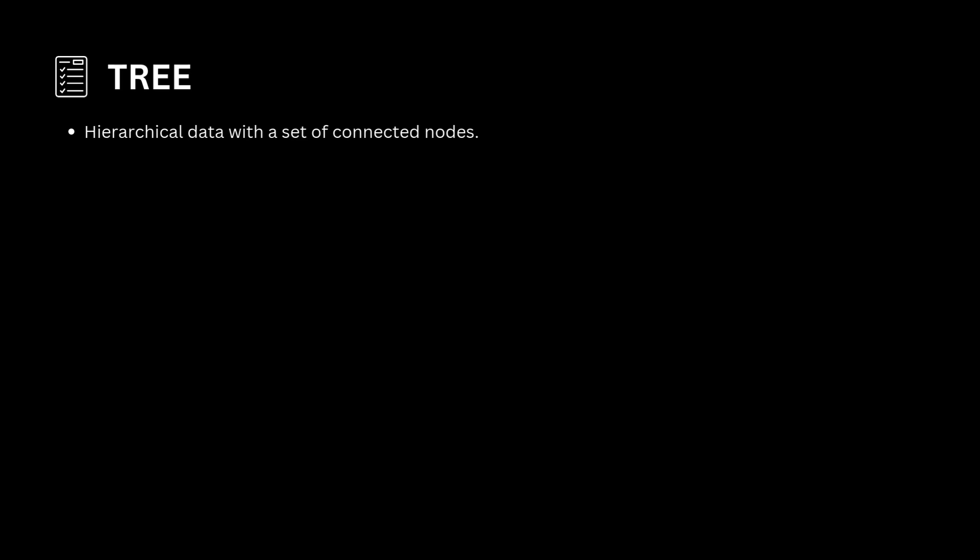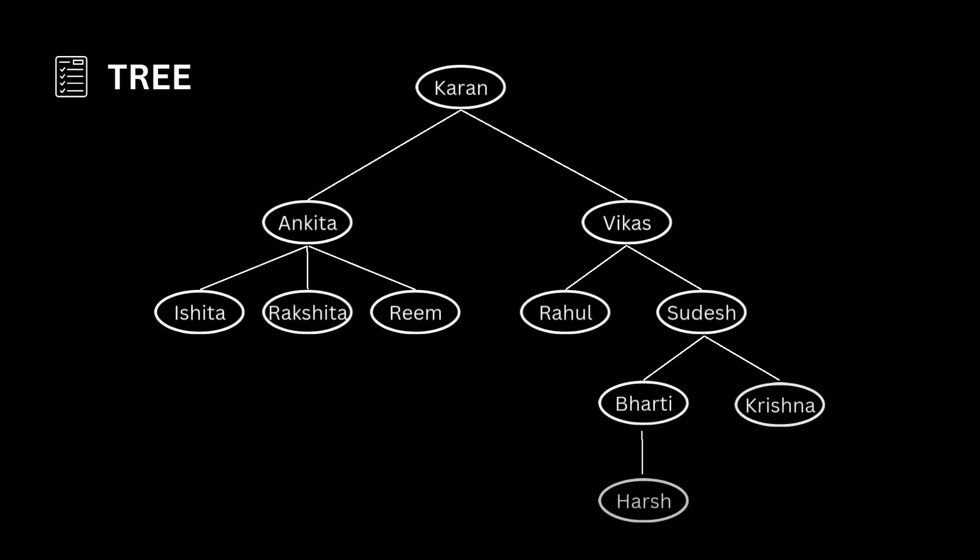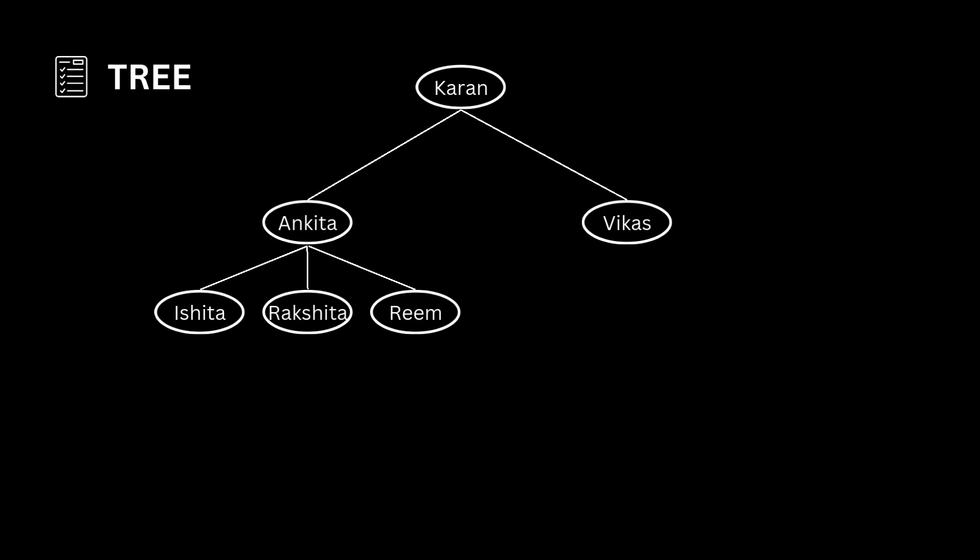If we want to show an organization's employees according to their designation in a hierarchical form, it can be shown like this. This is an organization's hierarchy in which the topmost position is of CEO, that is Mr. Karan, who has two direct reports Ankita and Vikas. Ankita has three direct reports: Ishita, Rakshita, and Reem. On the other side, Vikas has two reporters Rahul and Sudesh. Sudesh has two reporters Bharti and Krishna. At last, Bharti has one reporter, that is Harsh.